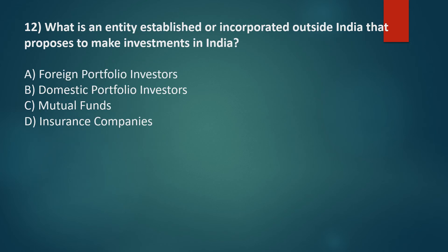What is an entity established or incorporated outside India that proposes to make investments in India? Option A: Foreign portfolio investors, Option B: Domestic portfolio investors, Option C: Mutual funds, Option D: Insurance companies. The correct answer is Option A: Foreign portfolio investors.